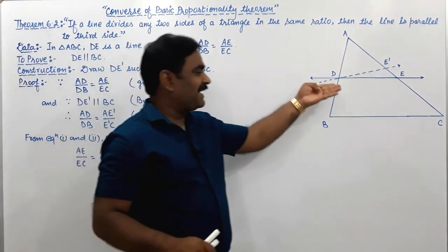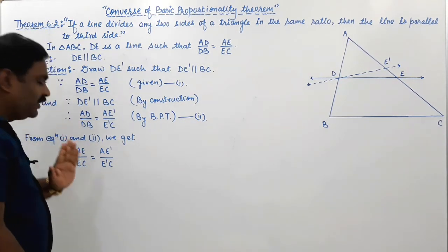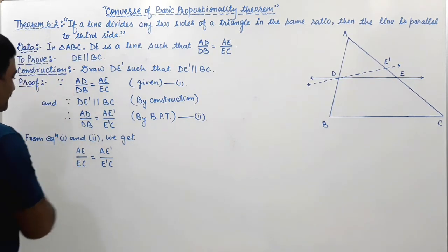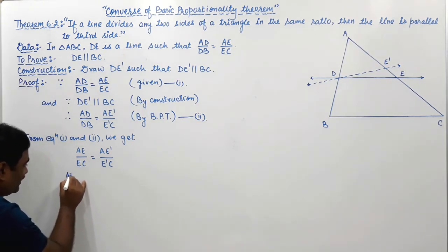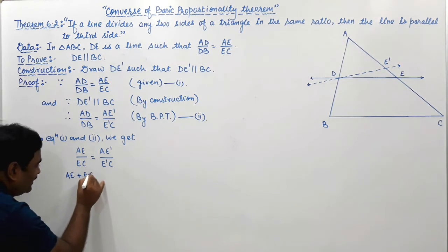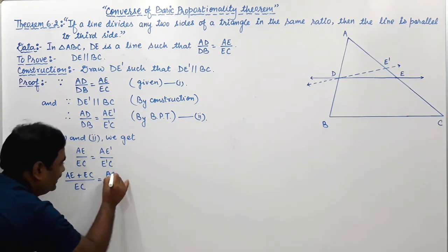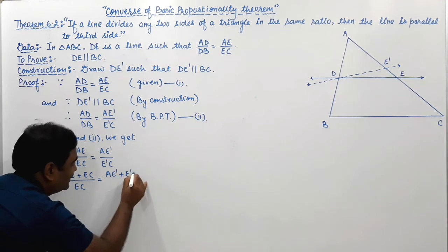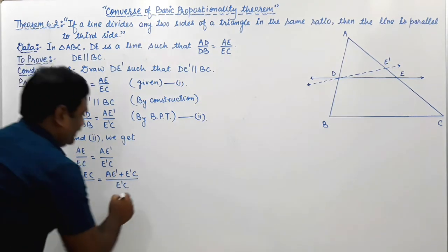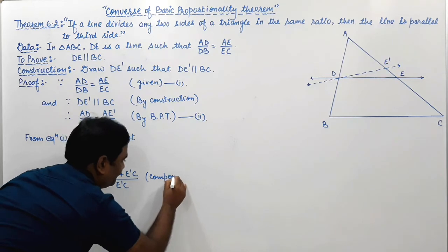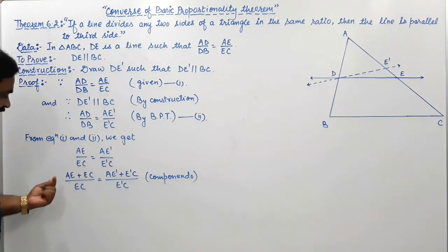With the help of this, you cannot directly say that DE is parallel to BC. So what we need to do is apply the componendo rule in this equation. From componendo: AE plus EC upon EC equals AE' plus E'C upon E'C, by componendo rule.